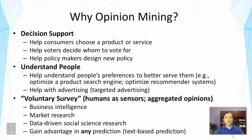The second application is to understand people, which is also very important. For example, it can help understand people's preferences, and this could help us better serve them. We can optimize a product search engine or a recommendation system if we know what people are interested in and what people think about products. It can also help with targeted advertising if we know what kinds of people tend to like what kinds of products.